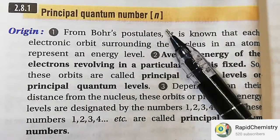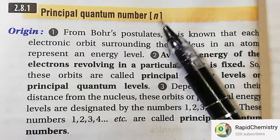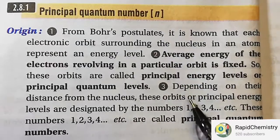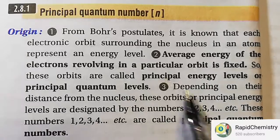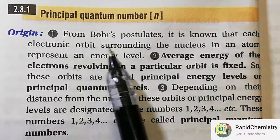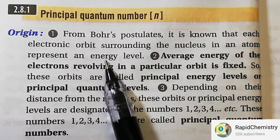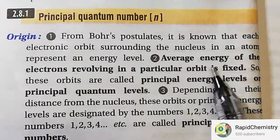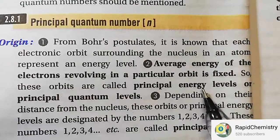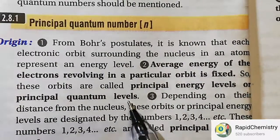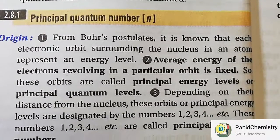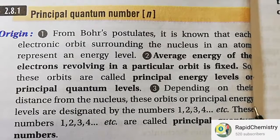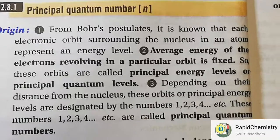Principal quantum numbers represent the specific paths around the nucleus in which electrons are revolving. From Bohr's postulate, each electronic orbit surrounding the nucleus represents an energy level, so the average energy of electrons revolving in a particular orbit is fixed. These orbits are called principal energy levels or principal quantum levels. Depending on the distance from the nucleus, these principal energy levels are designated by the numbers 1, 2, 3, 4, etc., and these numbers are called principal quantum numbers.